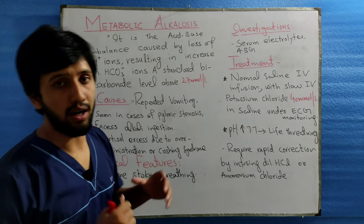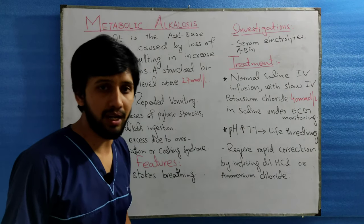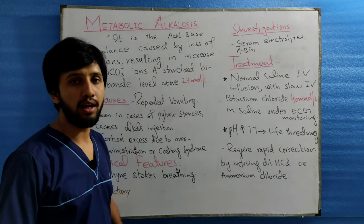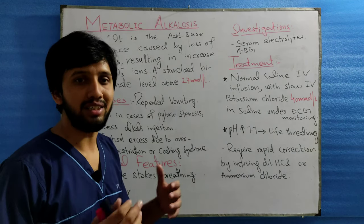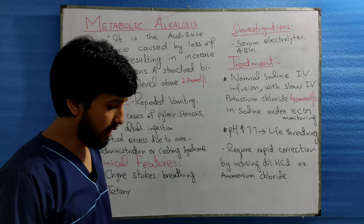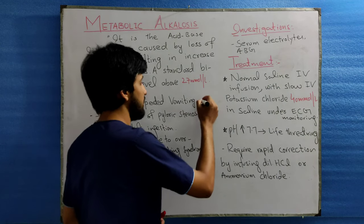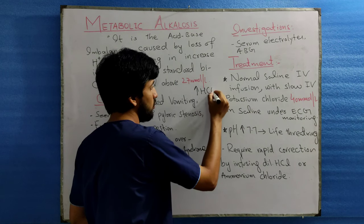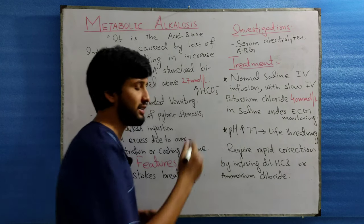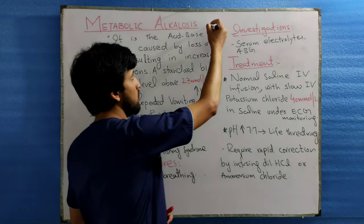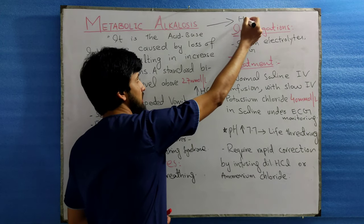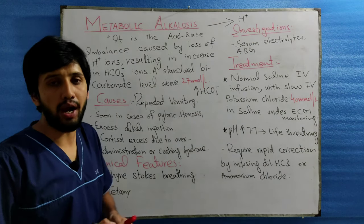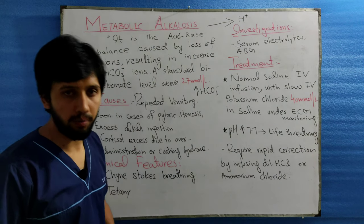Metabolic alkalosis is the disturbance of the acid-base balance in which there is a loss of H+ ions and the bicarbonate level is increased in the body. That is, there is an increase in the HCO3- ions in the body and a loss of H+ ions from the body, which may be due to endocrine disease or a renal problem.